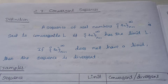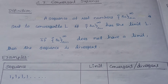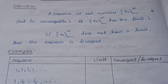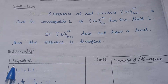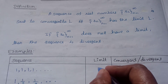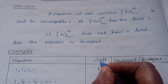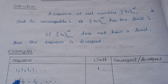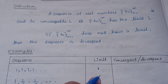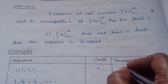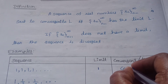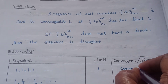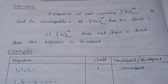Consider the sequence 1, 1, 1, and so on. In this sequence, every term is 1. As n tends to infinity, Sn approaches 1, so the limit of the sequence is 1. Since the limit exists, we say this is a convergent sequence.